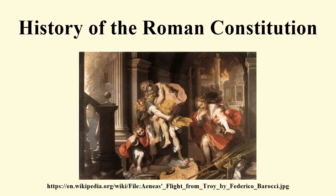In 70 BC, the generals Pompey Magnus and Marcus Licinius Crassus were both elected consul and quickly dismantled Sulla's constitution. In 62 BC, Pompey returned to Rome from battle in the east and soon entered into an agreement with Julius Caesar. Caesar and Pompey, along with Crassus, established a private agreement known as the First Triumvirate. Under the agreement, Pompey's arrangements were to be ratified, Crassus was to be promised a future consulship, and Caesar was to be promised a consulship in 59 BC and then the governorship of Gaul immediately afterwards.